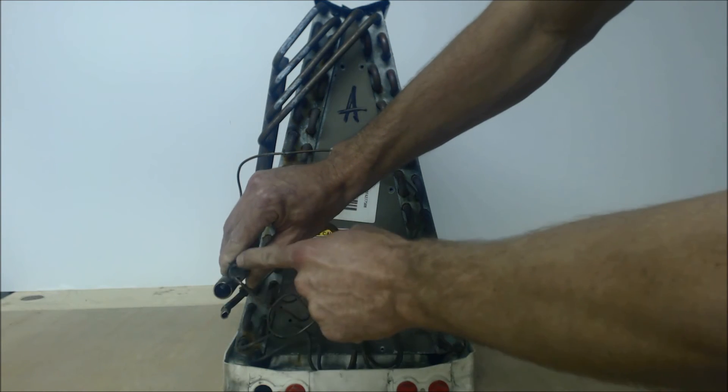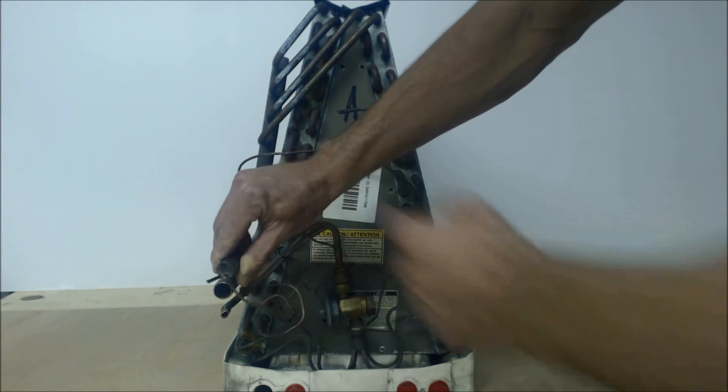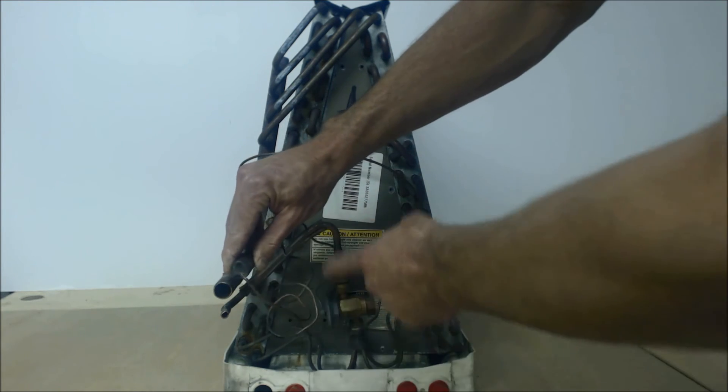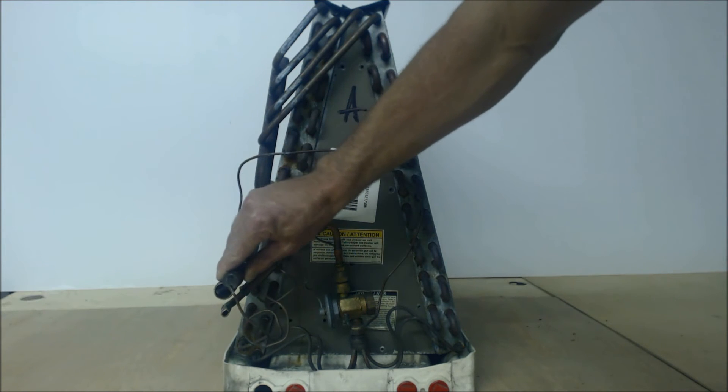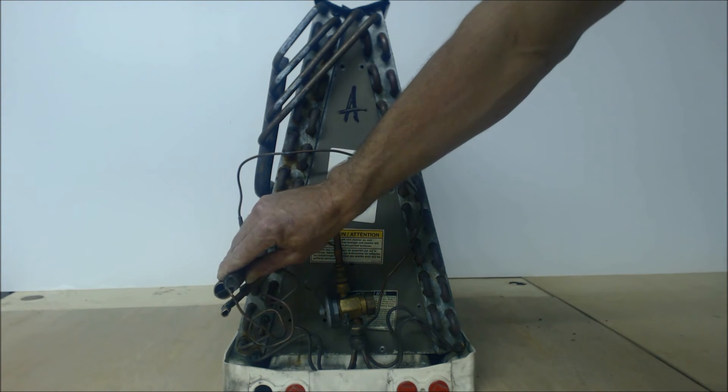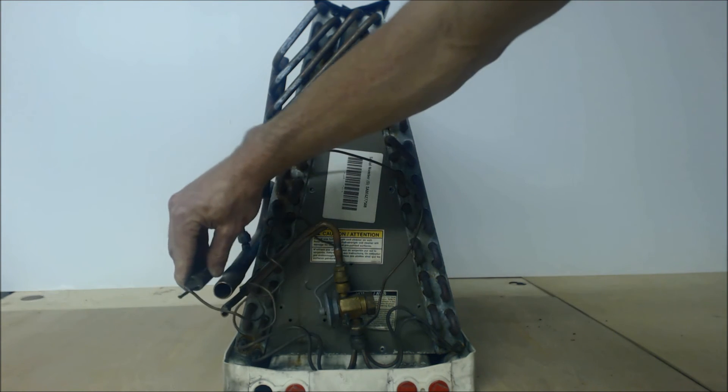That's where the vapor is going to be applied. Then you can mount it to the suction line. Make sure that you're mounting it somewhere where it's not on the bottom. Usually 10 or 2 o'clock is usually the best spots to mount it up.